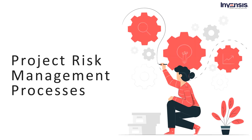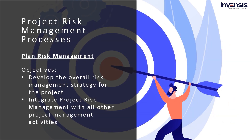Let's move to the next part of today's session and talk about the various project risk management processes. The first process on the list is plan risk management. The main objective of the plan risk management process is to develop the overall risk management strategy. Here, you will decide how the processes will be executed and integrate them with all other project management activities. Effective risk management requires the creation of a risk management plan. This plan describes how the risk management processes should be executed and how they fit in with the other processes.